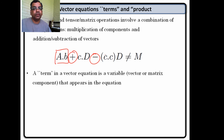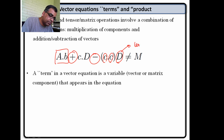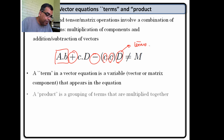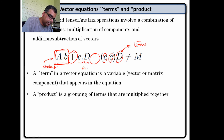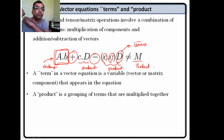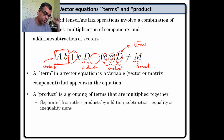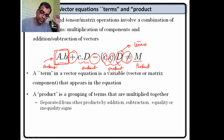We are going to introduce two things. One is called a term — any independent variable; these things are called terms. And a product is a grouping of terms. Products are separated either by plus signs, minus signs, or equality or inequality signs. So a product or term can have an index that appears twice but not more than twice. Up to twice is allowed, but not more than twice.